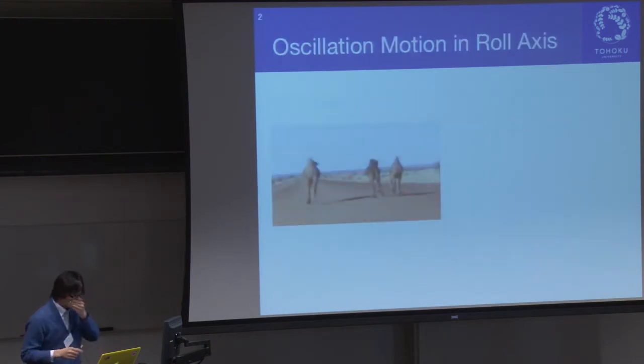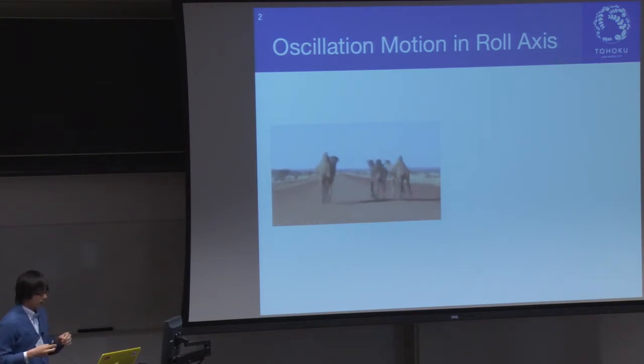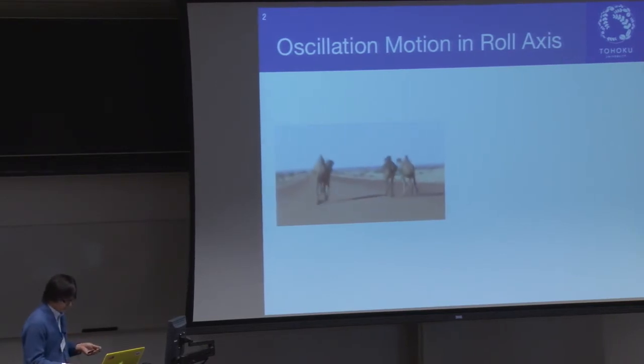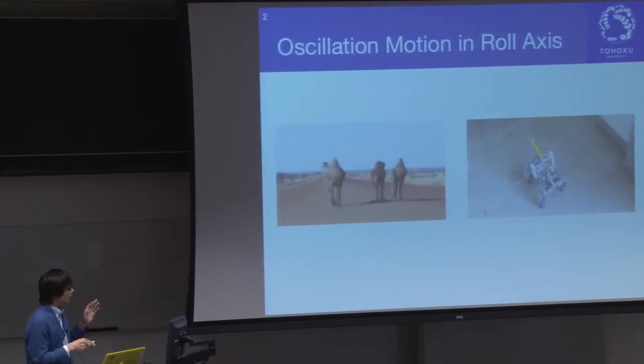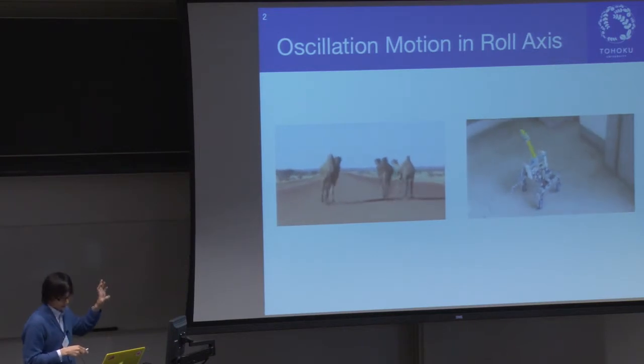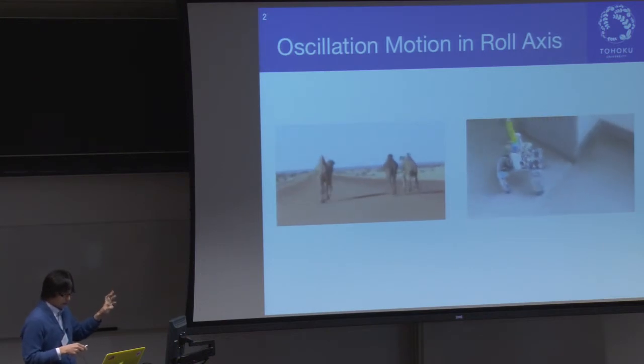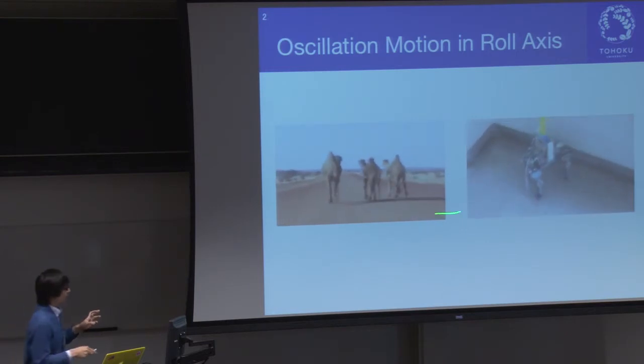So, in this study, we focus on the oscillating motion in the roll axis. This movie shows the camel locomotion, camel running. So, by watching this movie, camel exploits oscillating motion to generate pace gait, I think. Inspired by this animation, we input the physical pendulum, like physical elastic pendulum into our robot like this. As a result, our robot exhibit pace-like gait like this. Is it interesting, right?